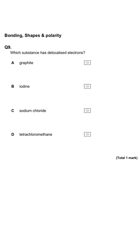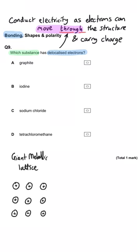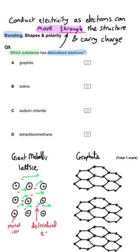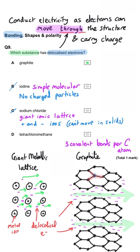Which substance has delocalized electrons? Substances with delocalized electrons can conduct electricity because the electrons can move through the structure carrying charge. Two substances you need to know: metals, where delocalized electrons move among the metal ions, and graphite, where each carbon atom has only three covalent bonds. Carbon has four valence electrons, so that fourth electron not involved in a covalent bond is delocalized and free to move. So the correct answer is A — graphite. Iodine is simple molecular with no charged particles, sodium chloride has positive and negative ions but not delocalized electrons, and tetrachloromethane is simple molecular.